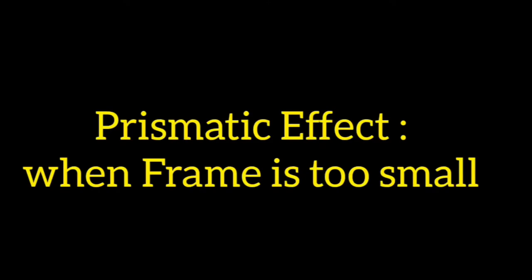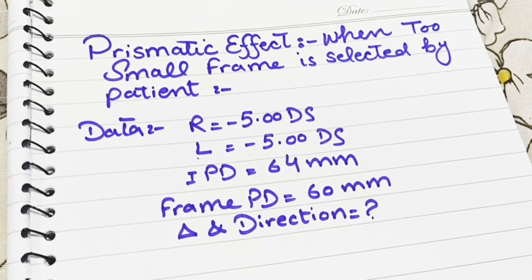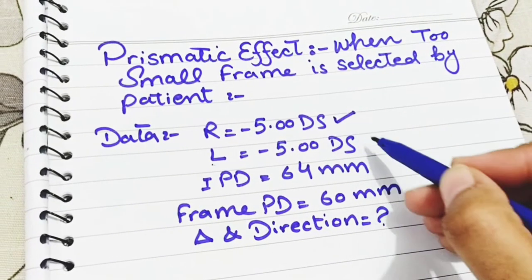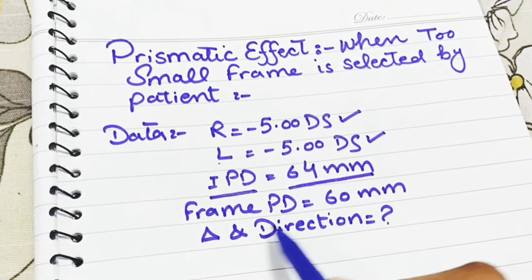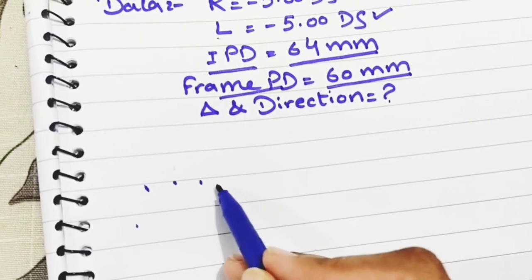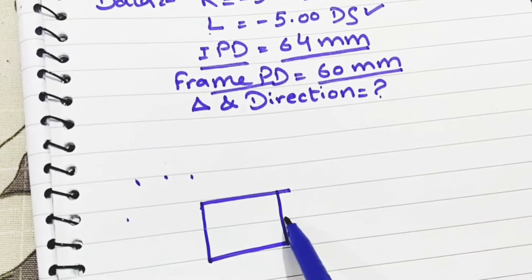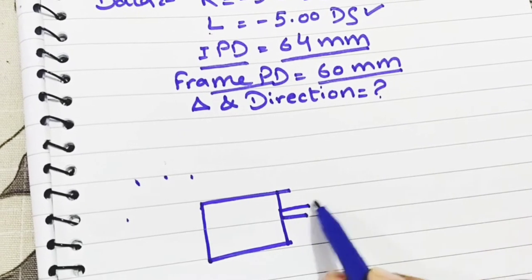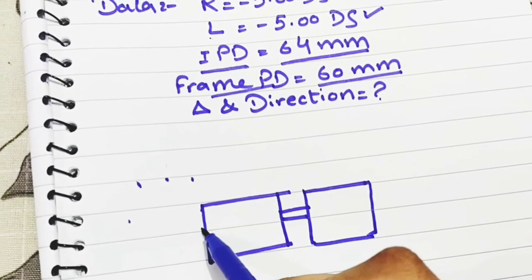Hello everyone. In this video I will explain the prismatic effect when a frame is too small. Right eye refractive error: minus 5, left eye: minus 5, IPD: 64 millimeters. This is the data given in this example, shown in a diagrammatic representation of the small frame selected by the patient.